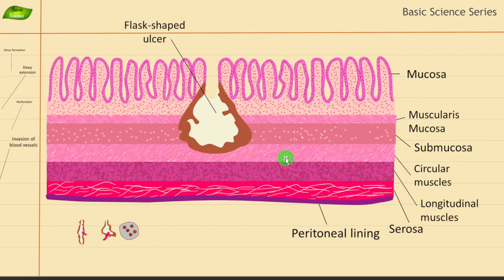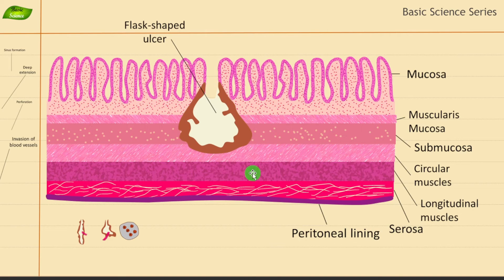Flask-shaped ulcers develop in the colon mucosal lining and are linked primarily to Entamoeba histolytica infection. They are commonly found in the ascending colon. These ulcers are relatively deep and penetrating into tissues. There will be inflammation and tissue damage around the region, represented in dark brown color. This can lead to another complication, which is perforation.